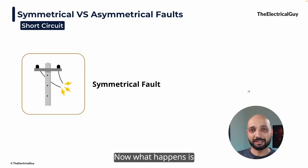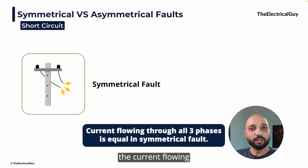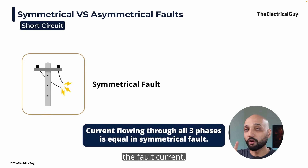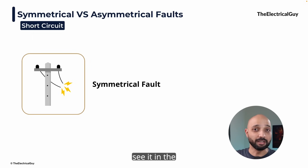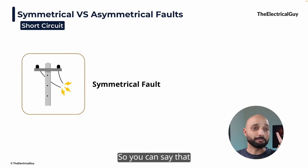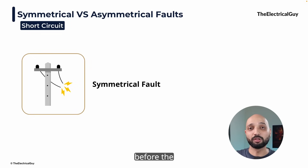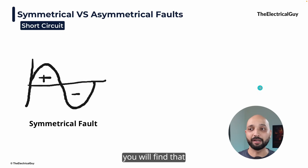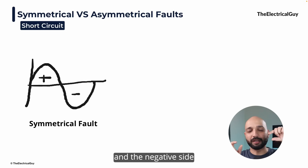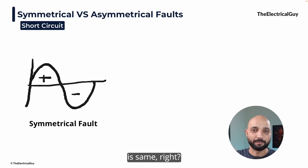Let's start with the symmetrical fault. What happens when this type of fault occurs is that the fault current flowing through all three phases is equal. Whatever fault current is flowing through R phase, Y phase and B phase will be the same — identical. All three currents will still be displaced at a 120-degree angle, as we see in the normal condition. So the system was in the balanced condition before the fault occurred and the system is still in the balanced condition even after the fault. If you look at the waveform of current in any one of the phases, you will find that the positive half cycle and the negative half cycle are the same — there is perfect symmetry. That's why they are referred to as the symmetrical fault.